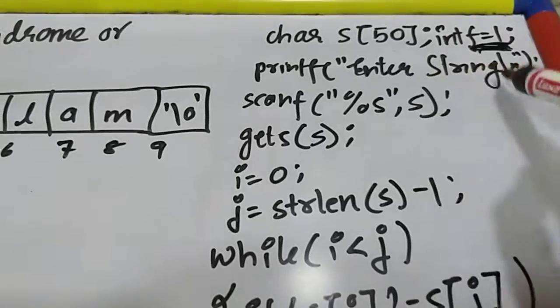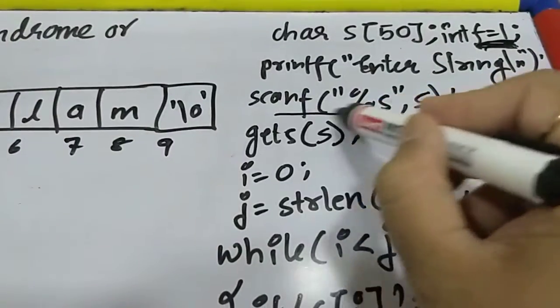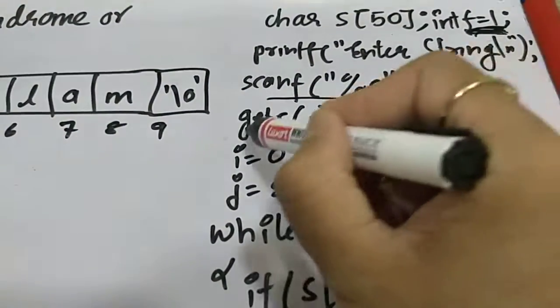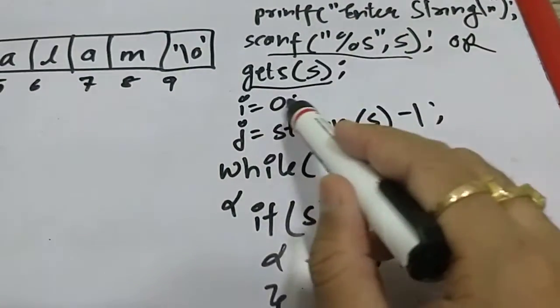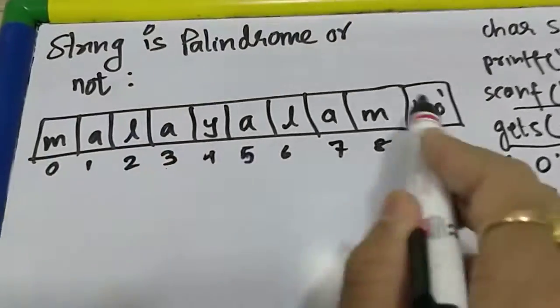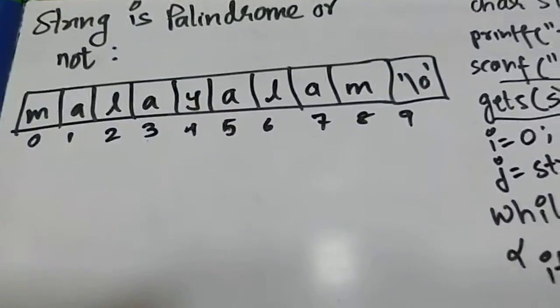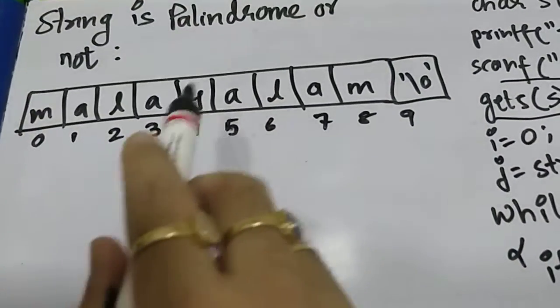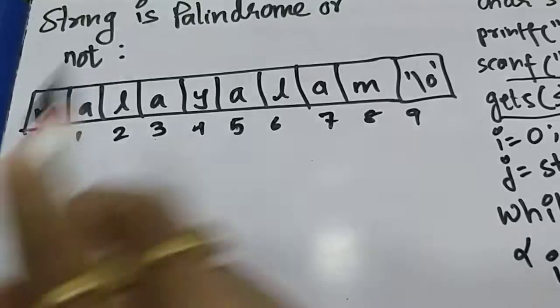I'll ask user to enter the string. User can use scanf or they may use gets. Now when you say string is palindrome, suppose user entered malayalam. Now malayalam is a palindrome because m-a-l-a-y-a-l-a-m, reverse of the string is string itself.